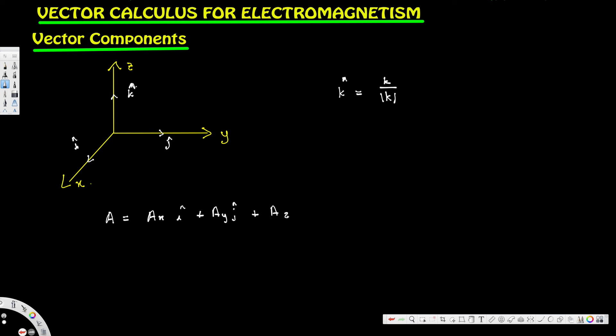And then Az k hat. So this is the way to express a vector in 3D space. Some books express it with small ax, ay, az, so all of them are the same thing. Let's look at the dot product.